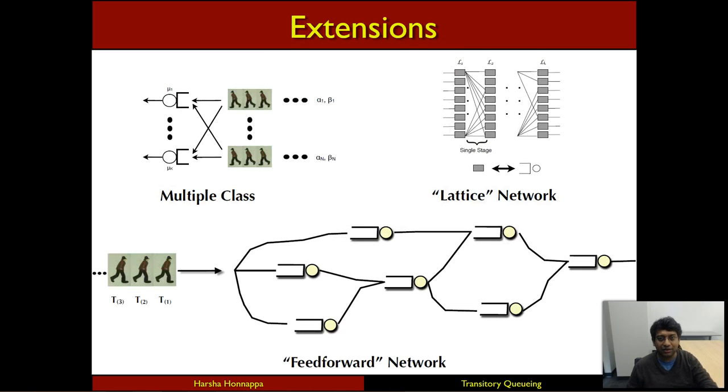We can also extend this analysis to more complicated situations where there are multiple classes of customers who arrive at this queueing system. We can also look at queueing networks, where there are more complicated network topologies. In all of these cases, we can identify the equilibrium, as well as the price of anarchy.